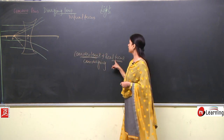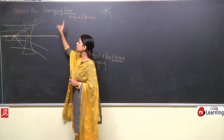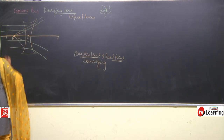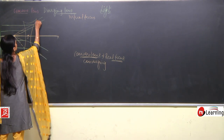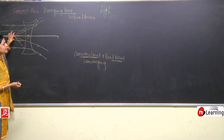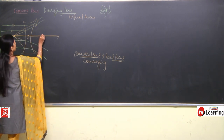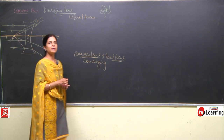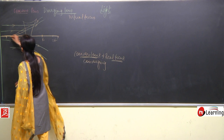Concave lens is a diverging lens — the rays are not intersecting after refraction, they are getting scattered. When we extend these rays backwards, we get one point where all rays appear to meet, and that is the focus. This side also will have a focus. So just like the convex lens, the concave lens also has two foci, and there is also 2F on both sides.